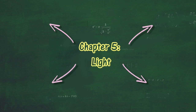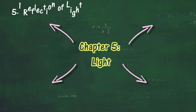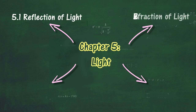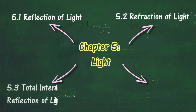In this chapter, we will learn more about light. There are four main sections in this chapter: 5.1 Reflection of Light, 5.2 Refraction of Light, 5.3 Total Internal Reflection of Light, and 5.4 Lenses.